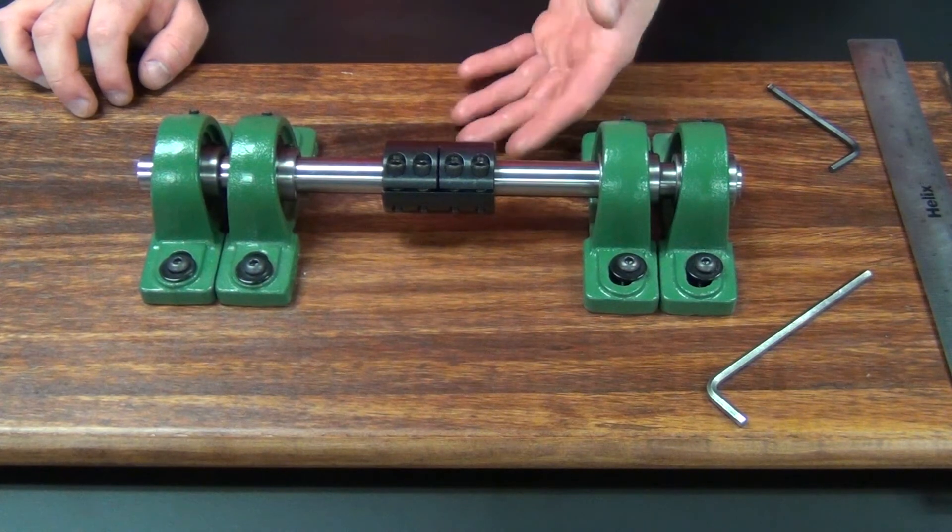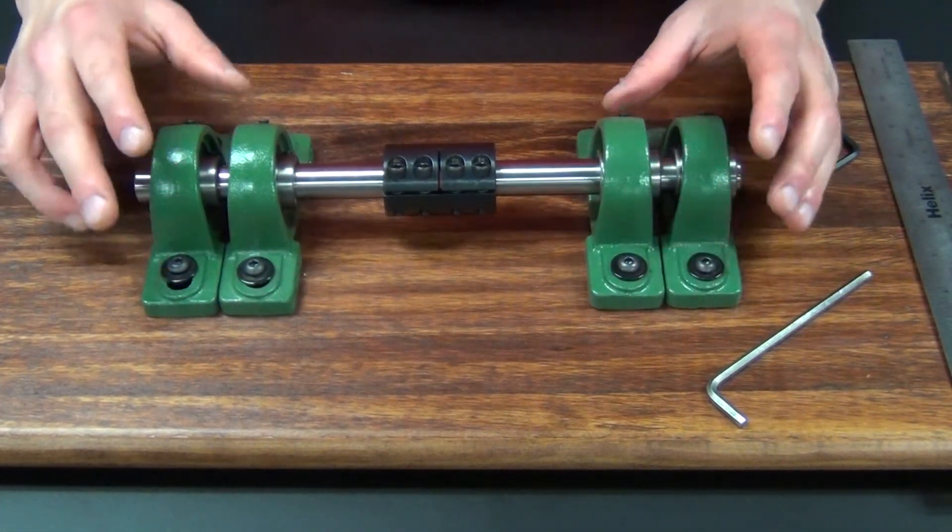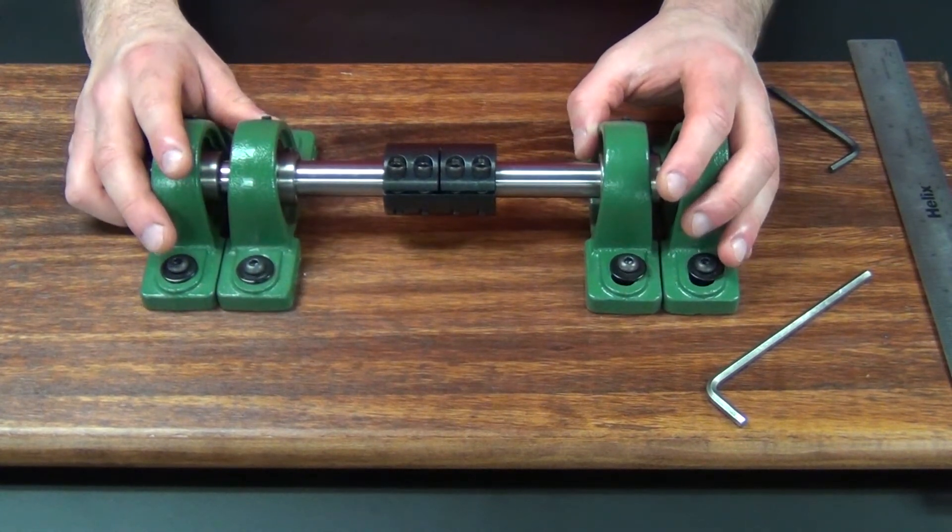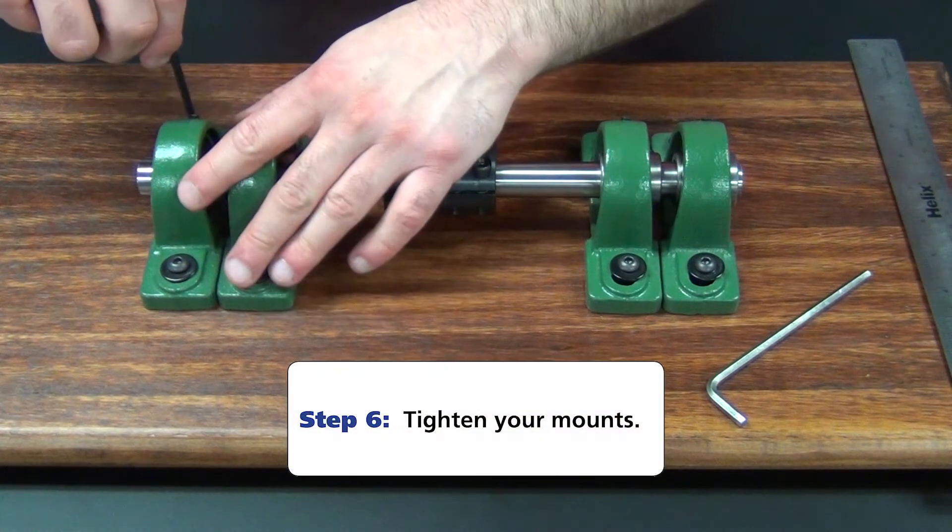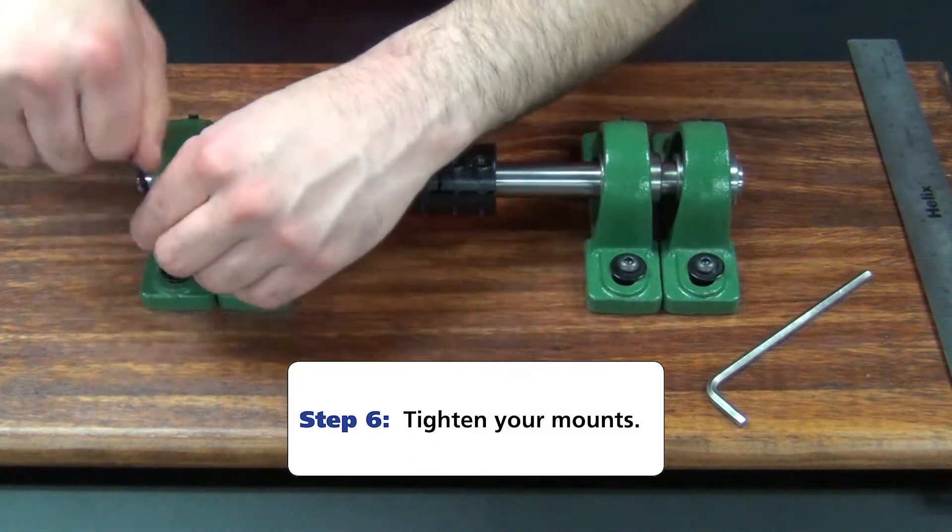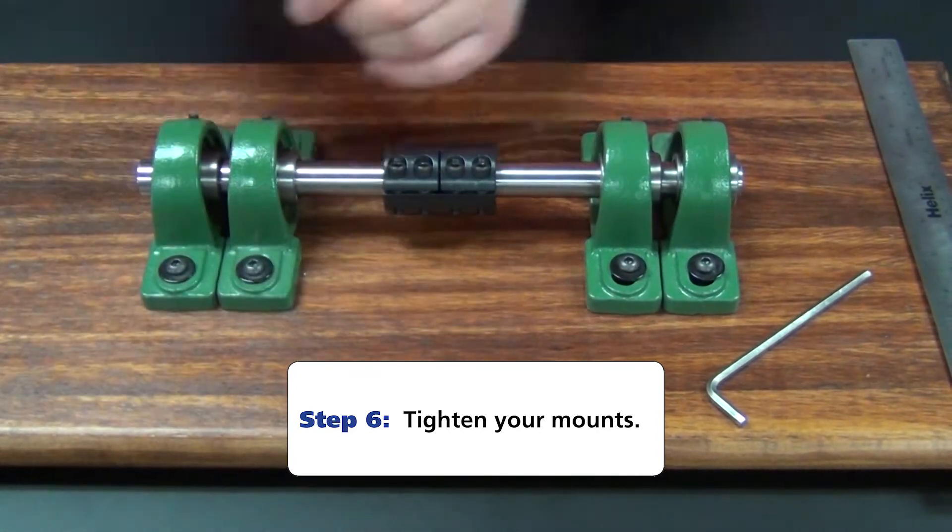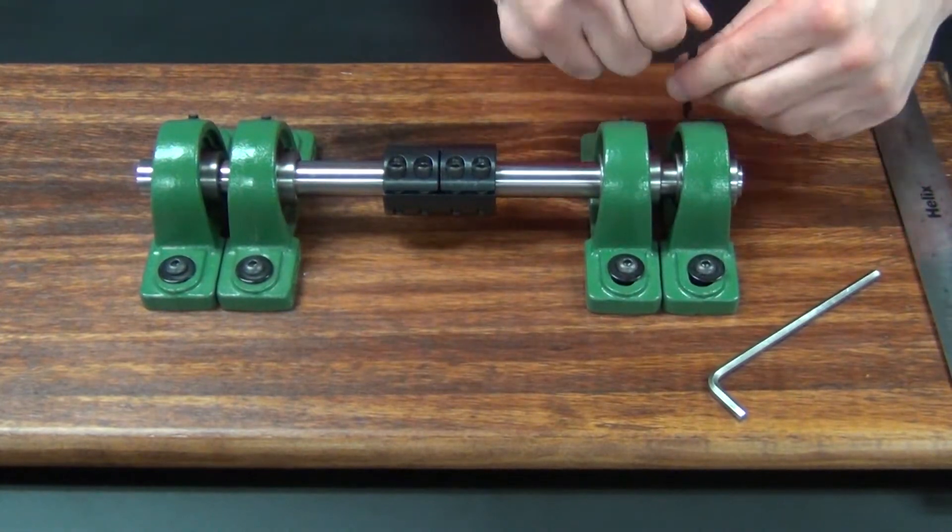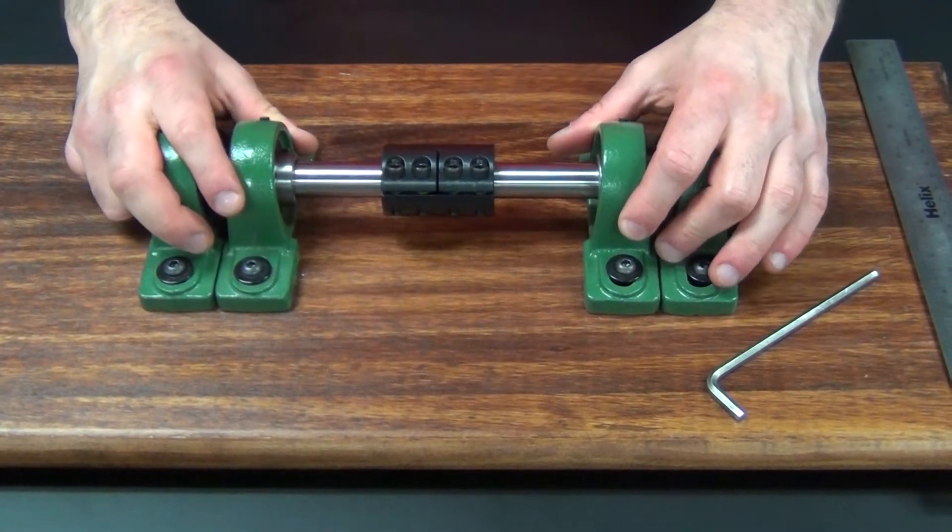Now this rigid coupling is installed correctly. I'm going to tighten my mounts. As you can see, there's no free-floating. Everything is moving together. This is now rigidly installed.